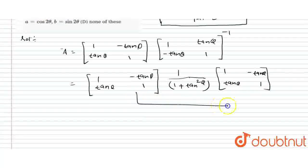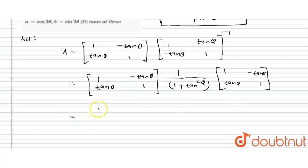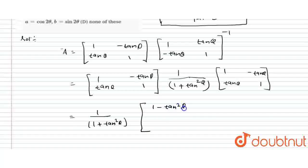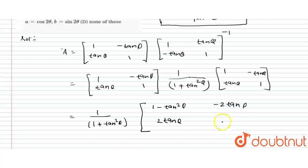Our further process is to multiply these two matrices together. So let's write 1 plus tan squared theta. When you multiply, here you will get 1 minus tan squared theta, here 2 tan theta, here minus 2 tan theta, and here again 1 minus tan squared theta.